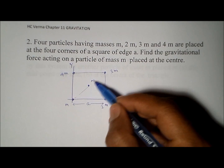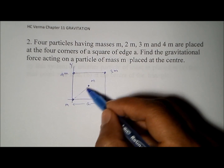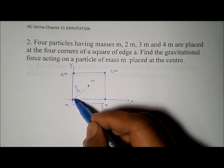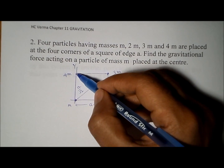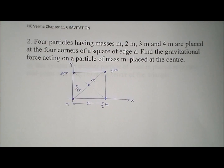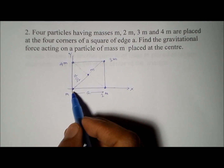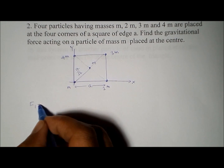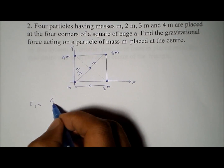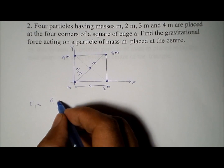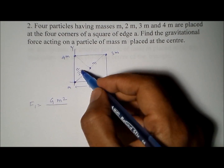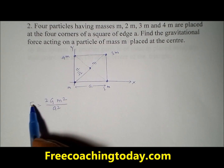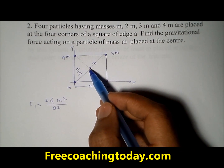The diagonal will have a length of a√2, and half of the diagonal — the distance from a corner to the center — is a/√2. We need this distance because we need to find the force between each corner particle and the center. This distance is the same for all four particles. The magnitude of the force F1 due to the first particle on m is given by F1 = Gm²/(a²/2).